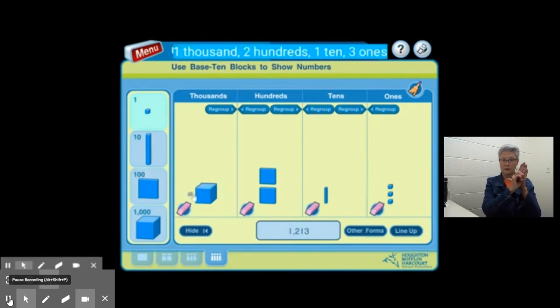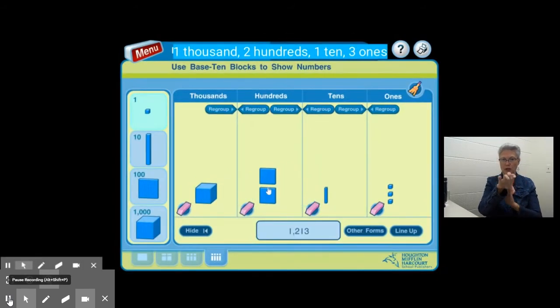In this example, I have one big cube which represents 1,000. I have two flats. Each one of them represents 100, so I have two hundreds.